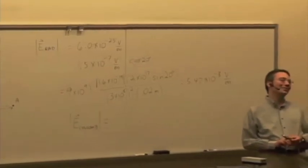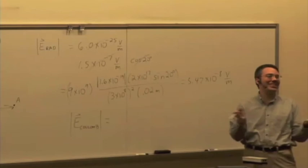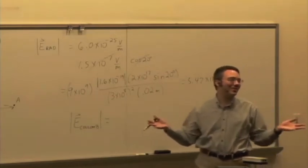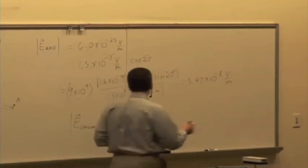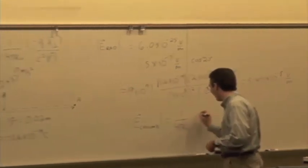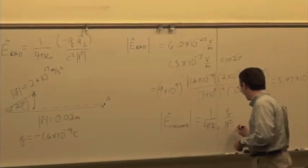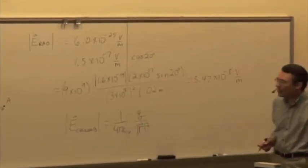What's the formula? What's the formula? Come on. You know it. Come on. This is the very first thing you had to memorize. Q over r squared. 1 over 4 pi epsilon 0, Q over r squared. And then there's r hat, but I just want the magnitude. So what's that?